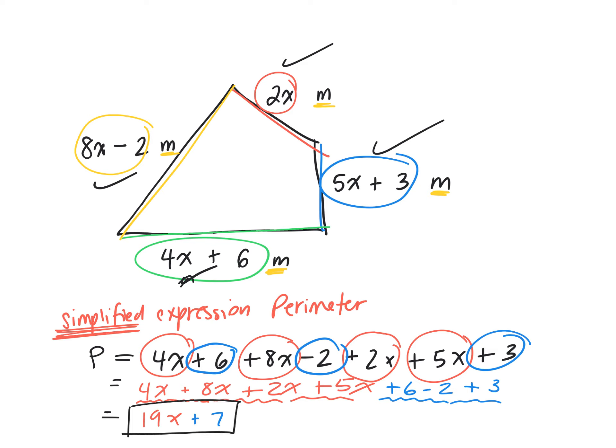That's the final answer. The simplified expression of this perimeter. 19x plus 7 meters.